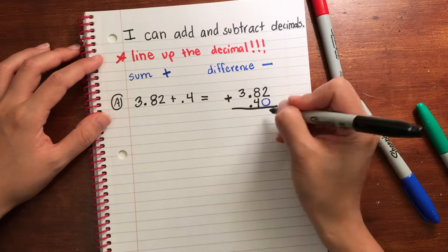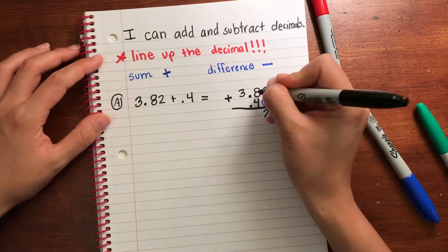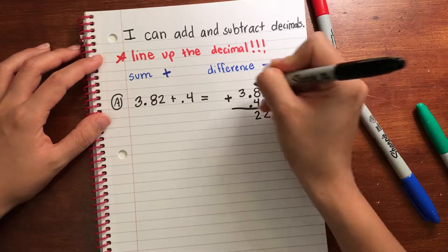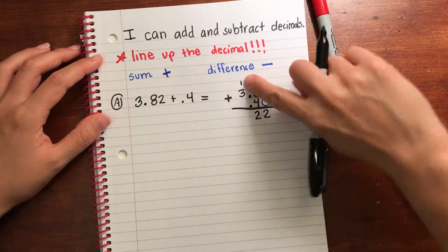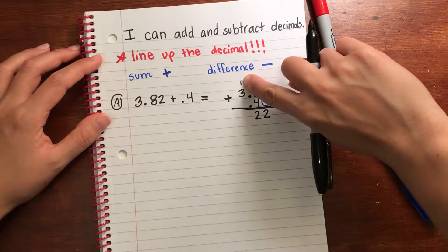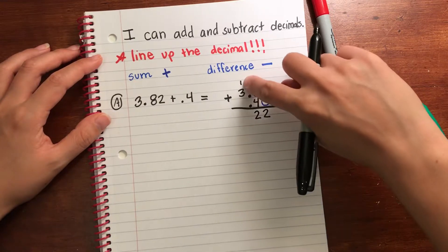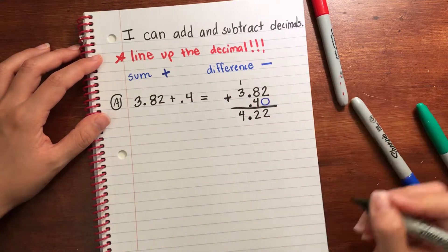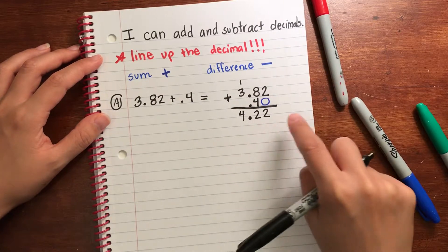Two hundredths plus zero hundredths is two hundredths. Eight tenths plus four tenths is twelve tenths. So I'm gonna have two tenths down here. I can rewrite the twelve tenths, the one as a whole, so it's four. I'm gonna bring down my decimal. It's 4.22.